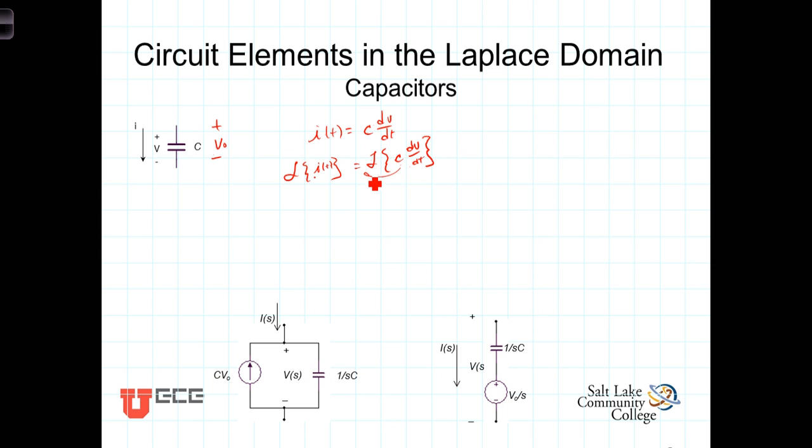We factor the C outside the integral of the Laplace transform. Over here we have I(s), then, is equal to C times the Laplace transform of dV/dt.